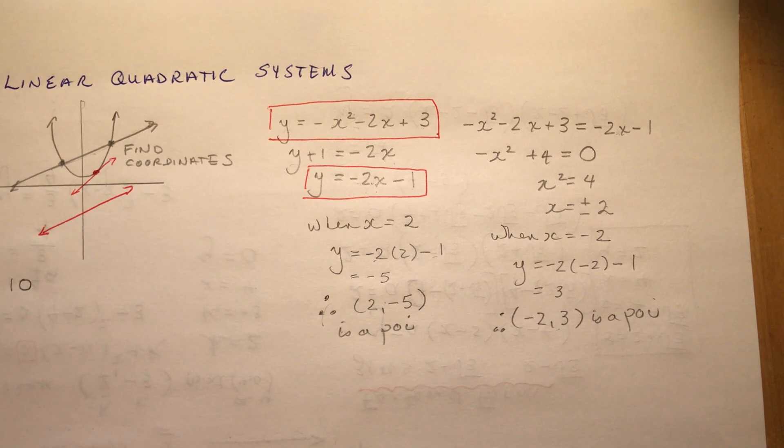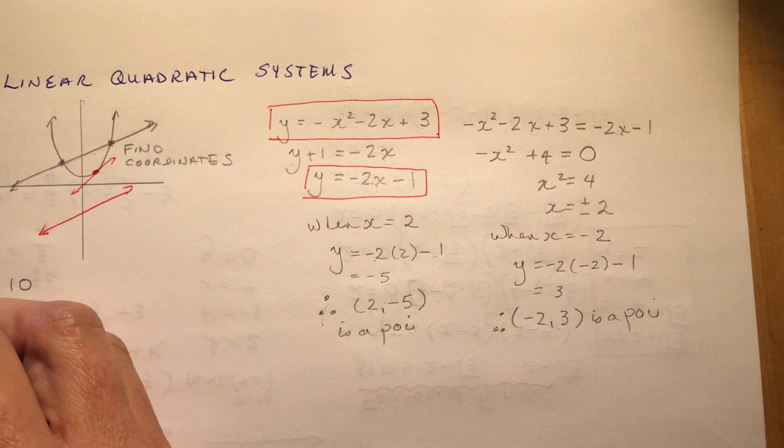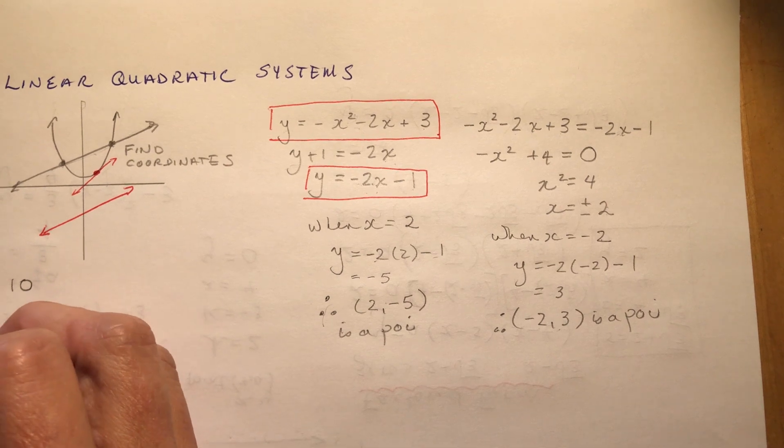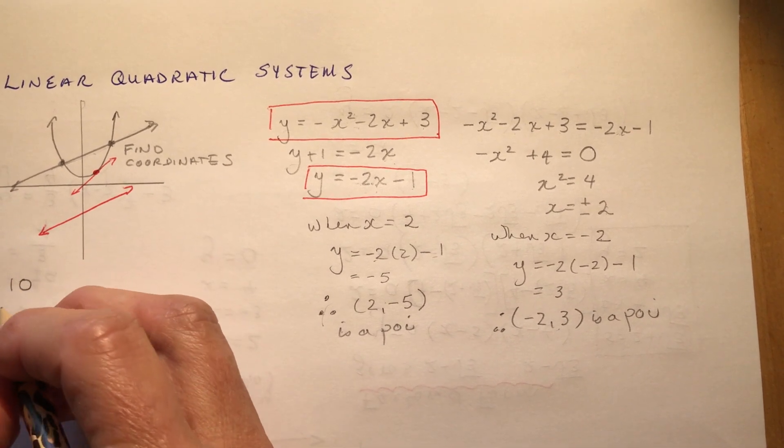So it says a daredevil jumps off the CN tower and falls freely for several seconds before releasing his parachute. His height, h, t in meters, t seconds after jumping can be modeled by this function. No, we're going to modify his equation.